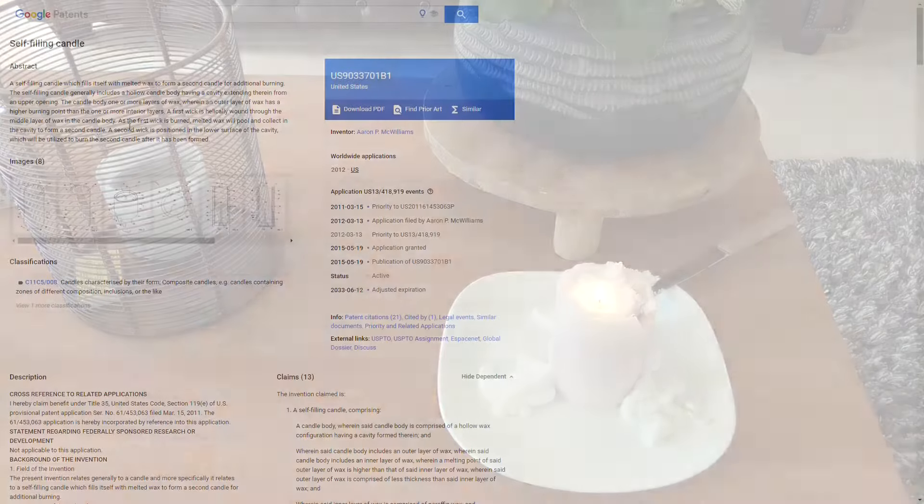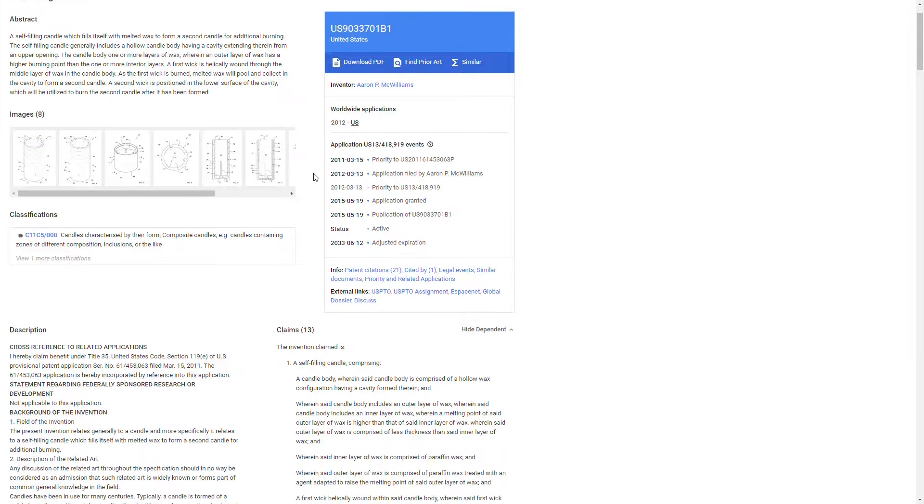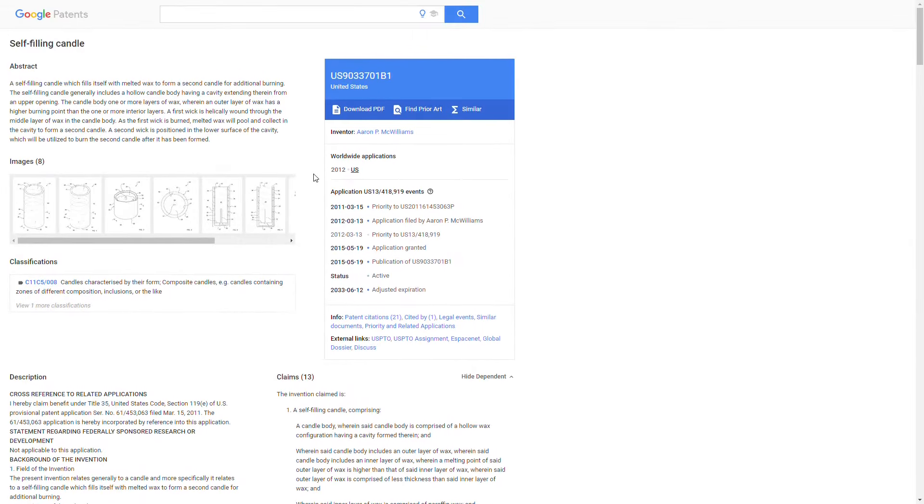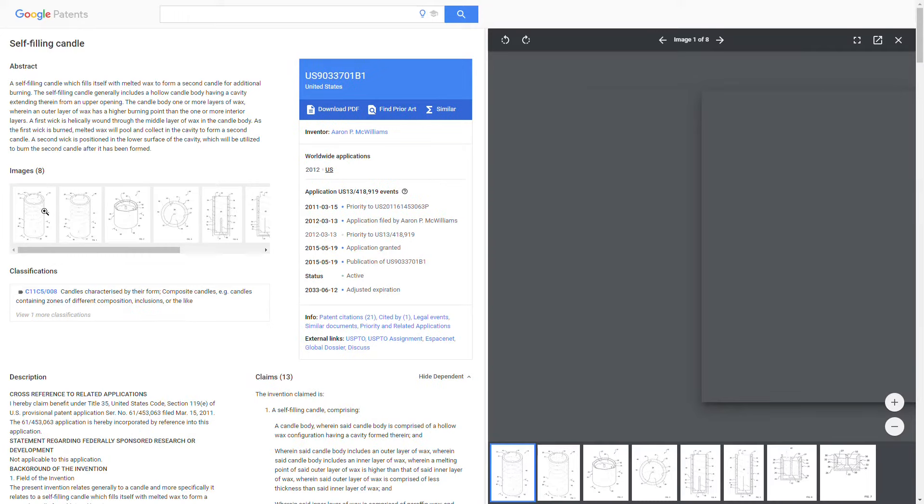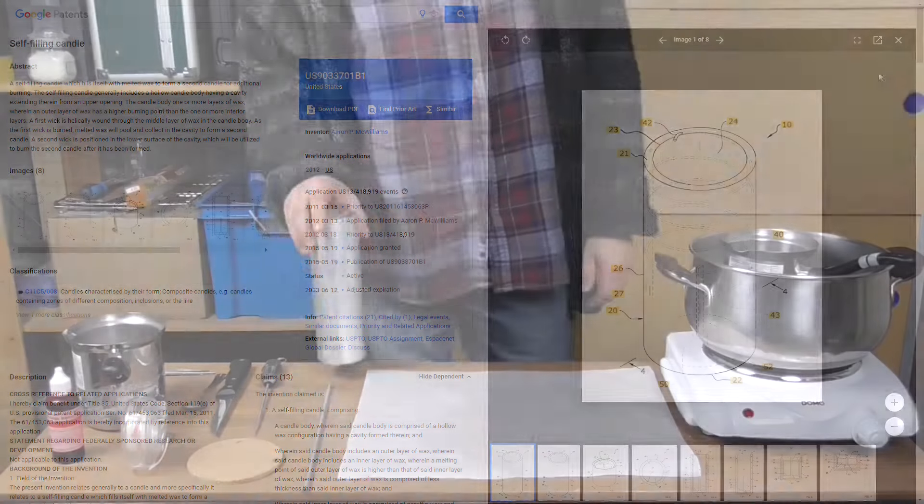A word of warning before we start, there are different types of spiral candles around, and the design of most of these is patented, so it's okay to explore how they work and make one for your own personal enjoyment, but it's more than probably not okay to make these candles with the intention of selling them. I made this video to show you different techniques used in candle making, and not as an invitation to infringe on anyone else's patent.